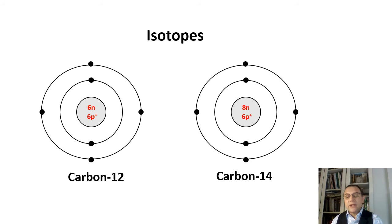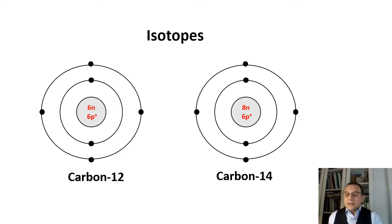Atoms of an element can exist in different forms. Atoms of the same element may have the same number of protons and electrons but a different number of neutrons — these atoms are called isotopes. Carbon-12 has six protons and six neutrons, and carbon-14 has six protons and eight neutrons. As a result they have different atomic masses. Certain isotopes are used to date human artifacts; other isotopes have important uses in medicine.